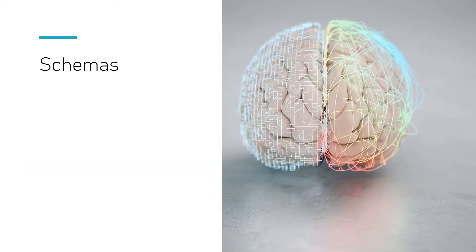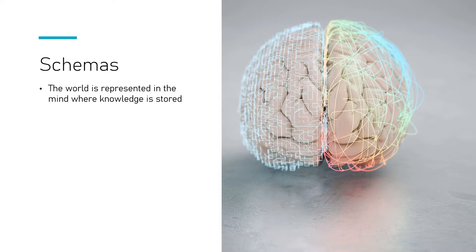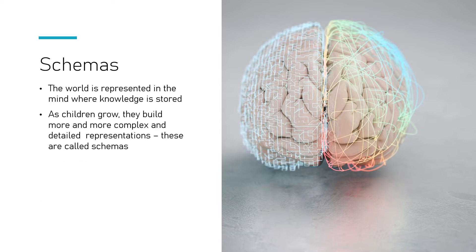Something else to be aware of are schemas. Schemas are the way that we represent the world in our brain when we store knowledge. Some people think of it as a filing system — a folder system — how we actually store the knowledge we're taking in from the world. As children grow, and as everyone grows, our schemas become more complex as we study something new and understand it in more detail. We build more complex schemas, develop links between different things, and get more detailed representations — we understand the world in a more detailed way.